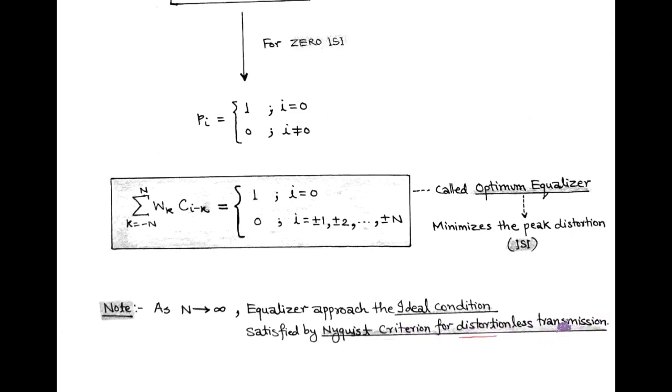So in equalization process at the receiver side, the value of adjustable weight must be large. But when we consider large value of adjustable weights, it will increase the cost of equalizer at the receiver side. So in order to get optimum output, we must take care of adjustable weight and costing of the cascaded system.